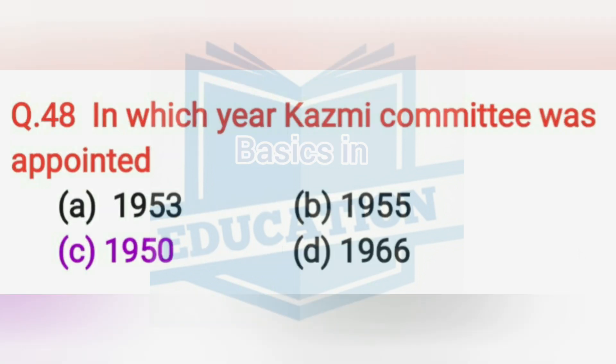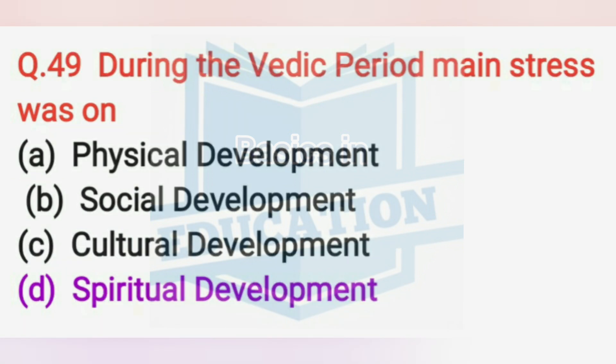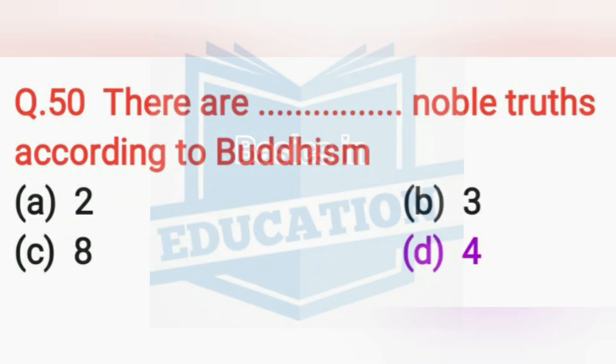The Cosme Committee was appointed in the year 1950. During the Vedic period, man's primary interest was on spiritual development. According to Buddhism, there are four noble truths.